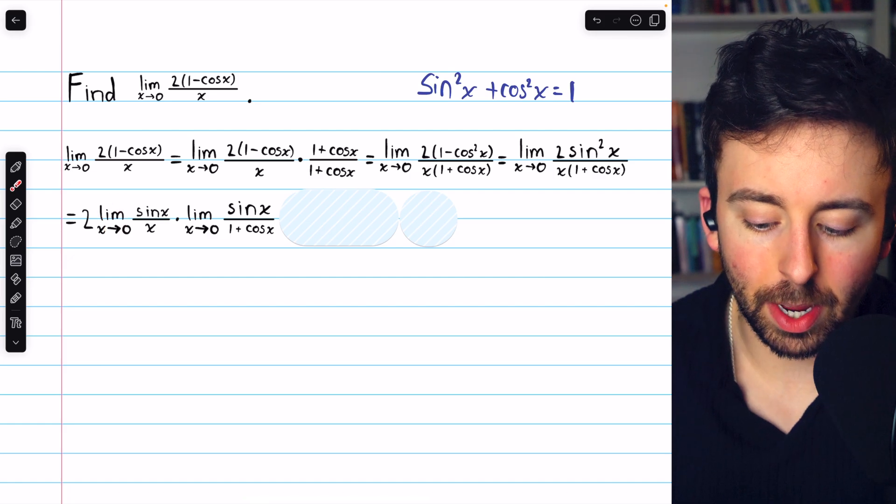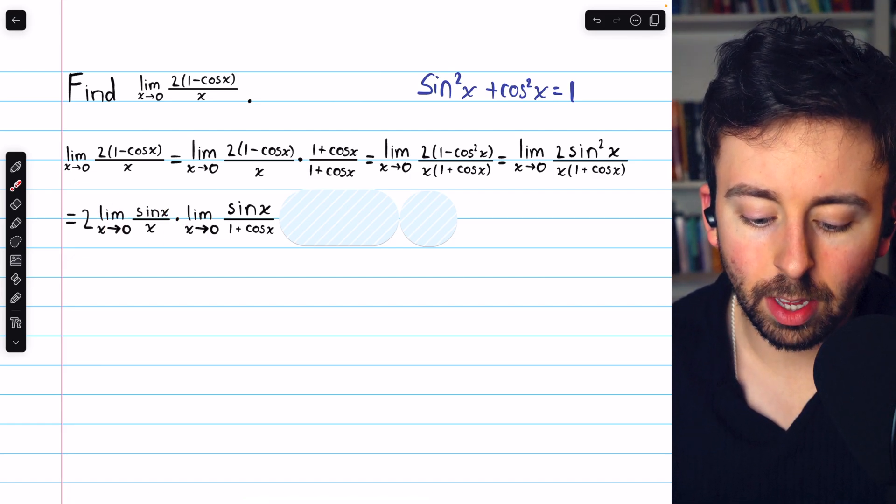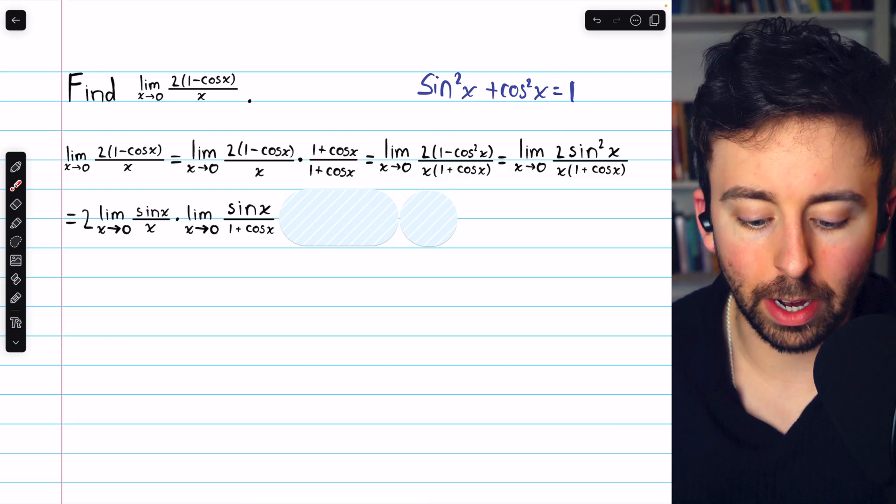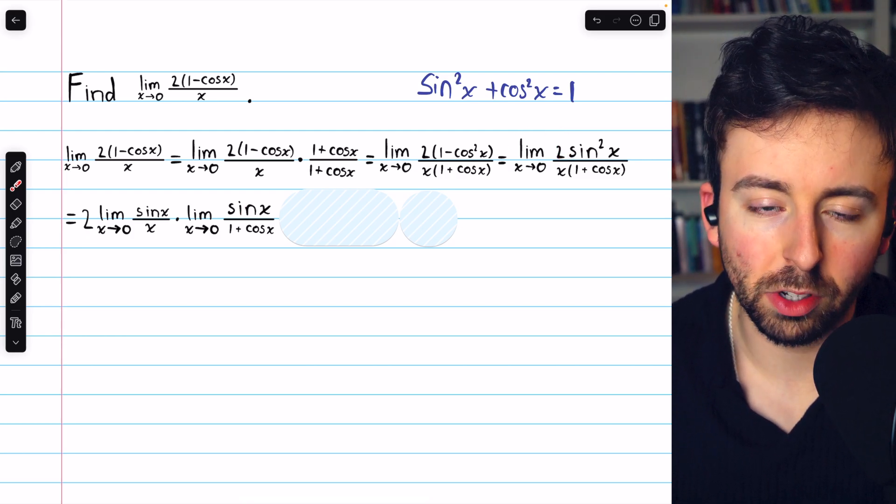So we have the limit of sine x over x times what remains once we take out the sine x in the numerator is just sine x, because we also took out the two, because why not?